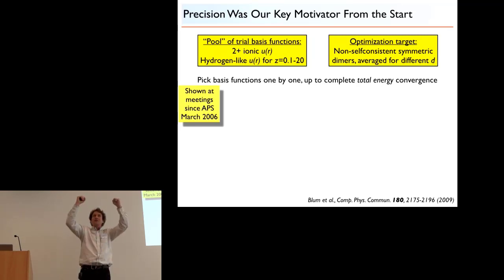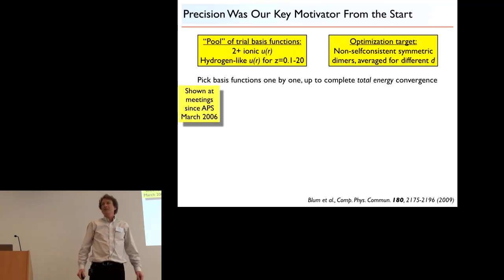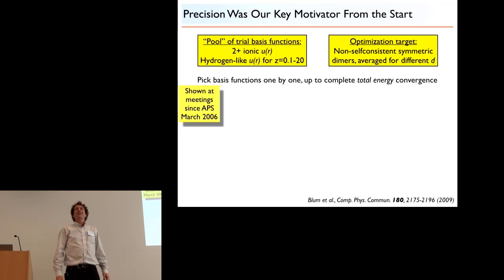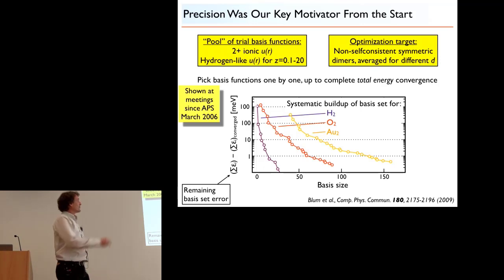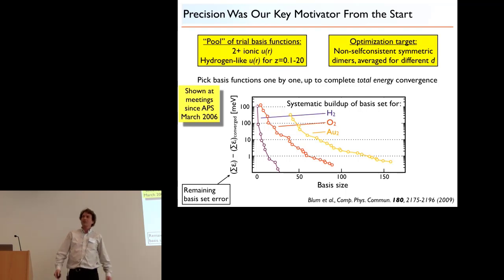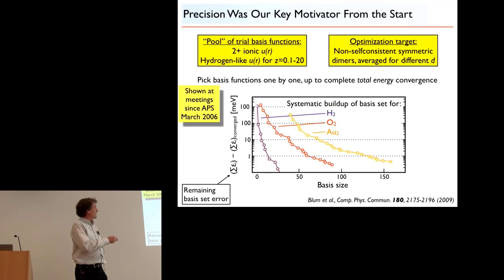Start with an atomic minimal basis with a set of dimers. Add a basis function to the basis set, calculate the total energy, add another basis function, calculate the total energy again, and see which one is lower. Once you are through the pool, select the lowest energy basis function, then go through the pool again. You end up with curves like this — shown here for hydrogen, oxygen, and gold — where the x-axis is basis set size and the y-axis is the total energy error on a logarithmic scale. For hydrogen, the minimal basis gives about 100 meV per atom; adding a single S function brings it down significantly, then a P function, then another S function, D function, and so on.